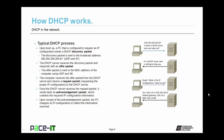Here is the typical DHCP process. Upon boot up, a PC configured to request an IP configuration sends a DHCP discovery packet. The discovery packet is sent to the broadcast address 255.255.255.255 on UDP port 67. The DHCP server is listening on that port for that discovery packet. When the DHCP server receives the discovery packet, it responds with an offer packet, basically saying it's here to help. The offer packet is sent back to the MAC address of the computer requesting help on port 68.